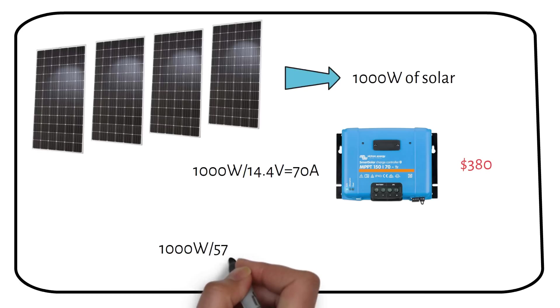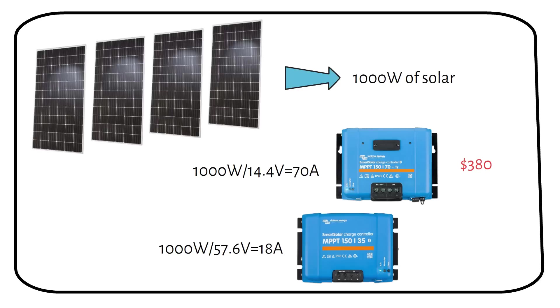And for a 48 volt system, the same 1000 watts of solar panels only requires a 20 amp charge controller. A charge controller for this setup will cost you $180, less than half the price with room to spare.